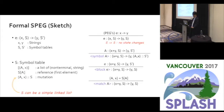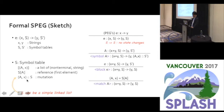I will briefly present the formal semantics of SPEG; the complete definition is in the paper. A SPEG parsing expression is given by the transition from an input string to the remaining string, with a state transition. The state is represented by the symbol table, which is a list of non-terminal and string pairs. The mutation is a concatenation of list entries. Using this notation we can describe the operational semantics of all SPEG annotations. One important thing is that the symbol table can be implemented as a simple linked list.